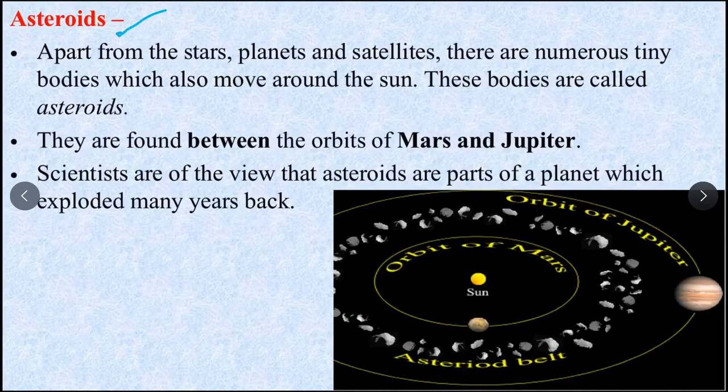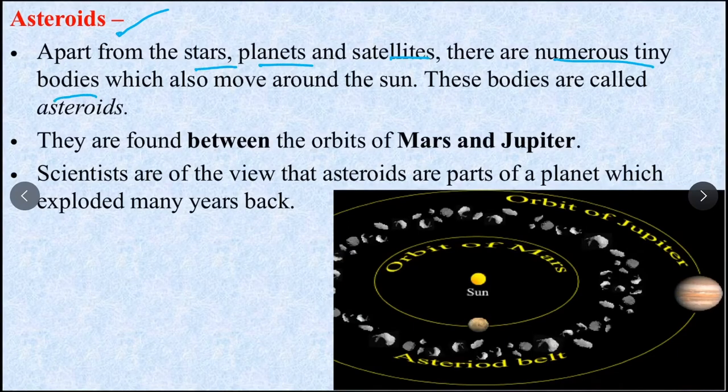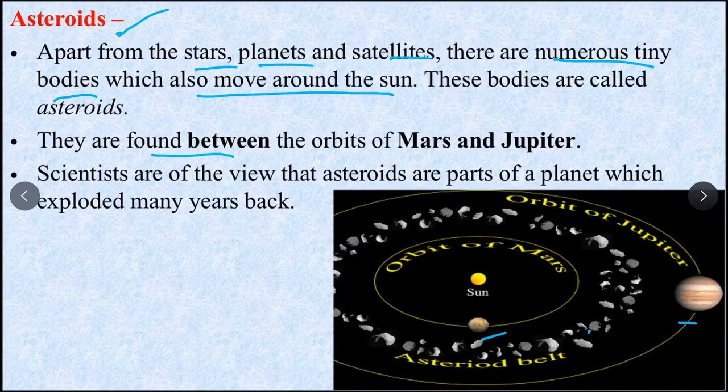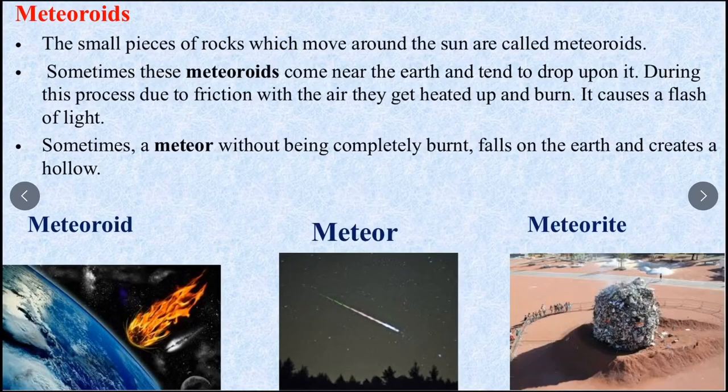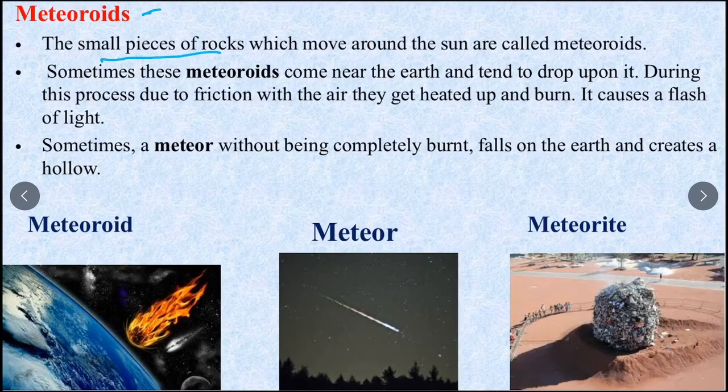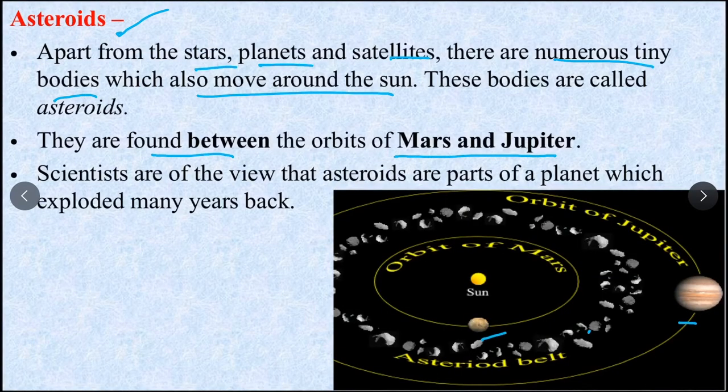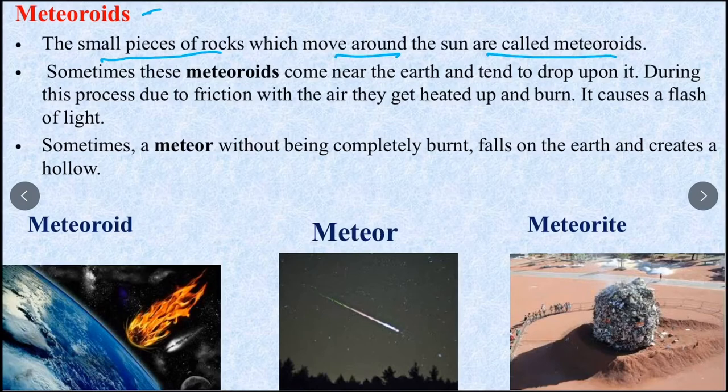What are asteroids? Apart from the stars, planets and satellites, there are numerous tiny bodies which also move around the Sun. See these are the tiny bodies here. Asteroids are found in the orbit between Mars and Jupiter.